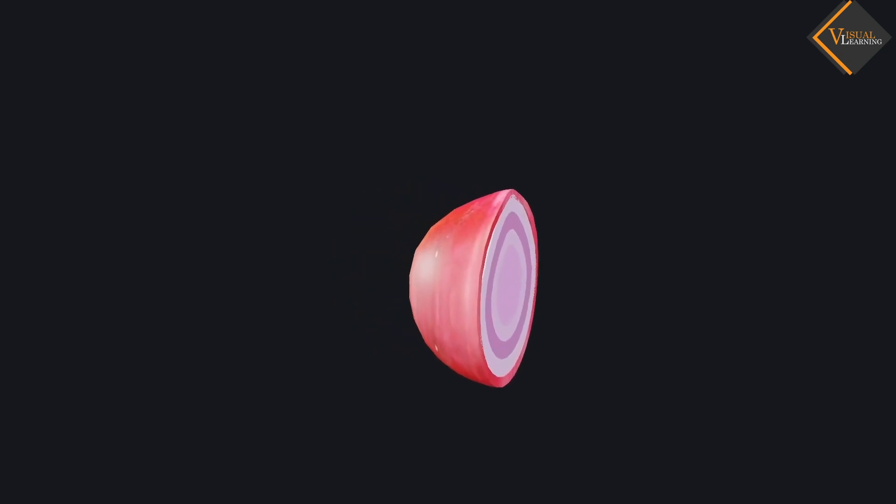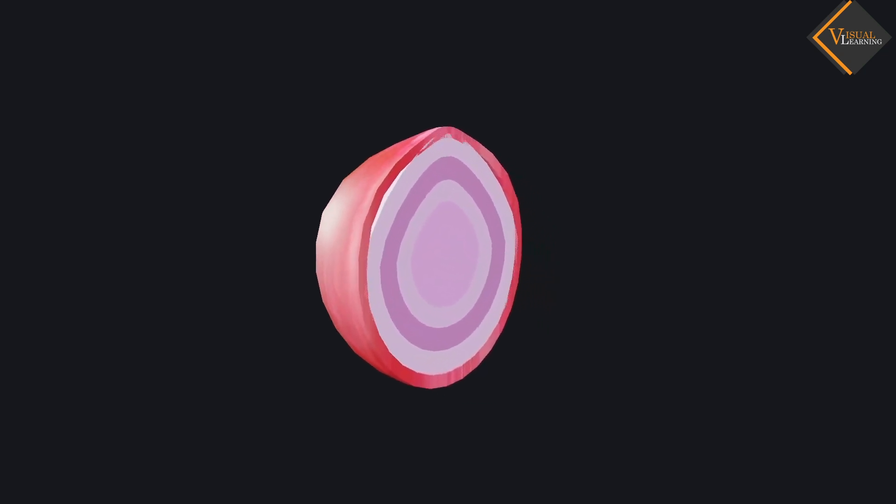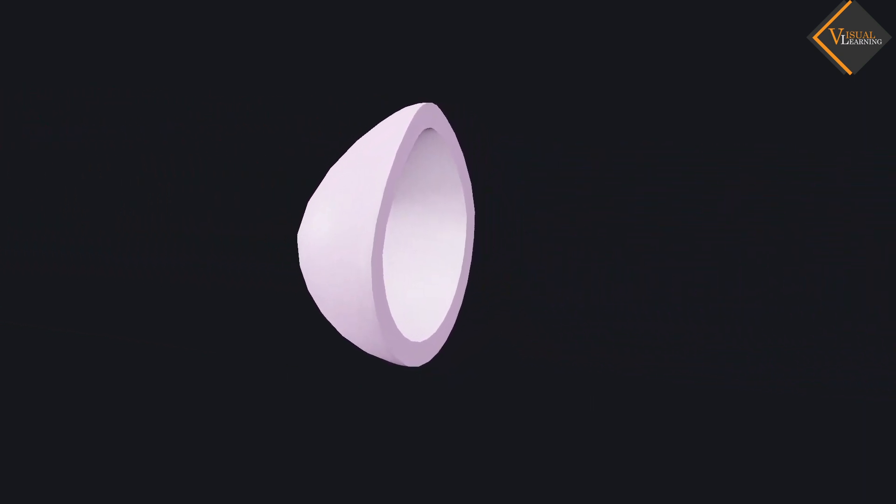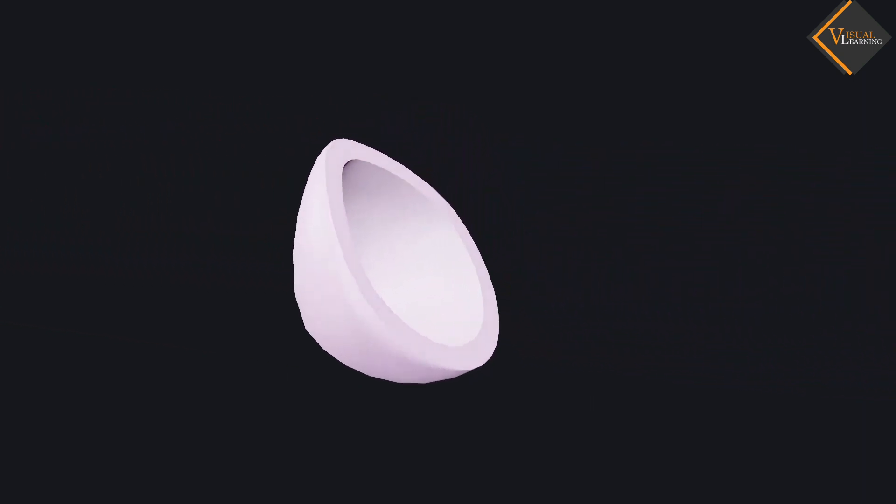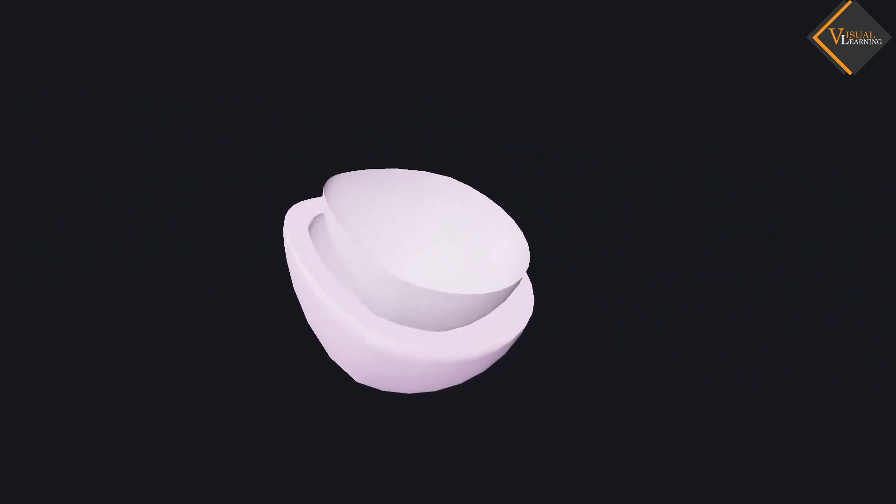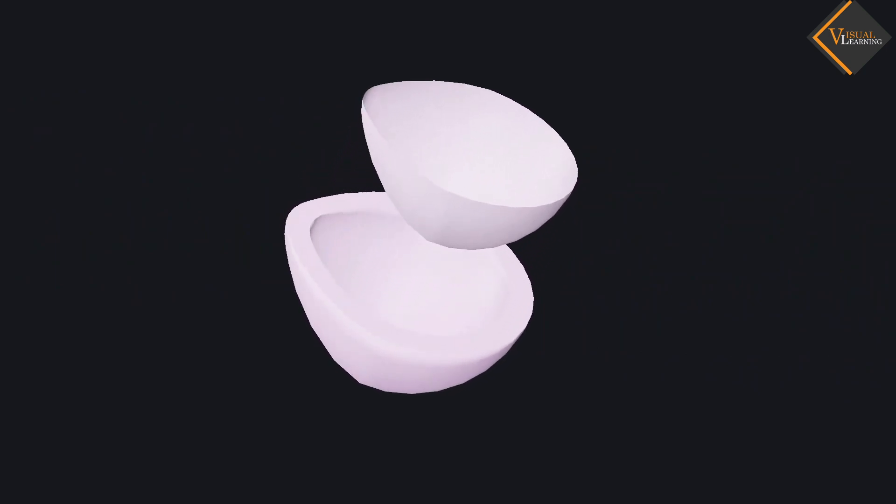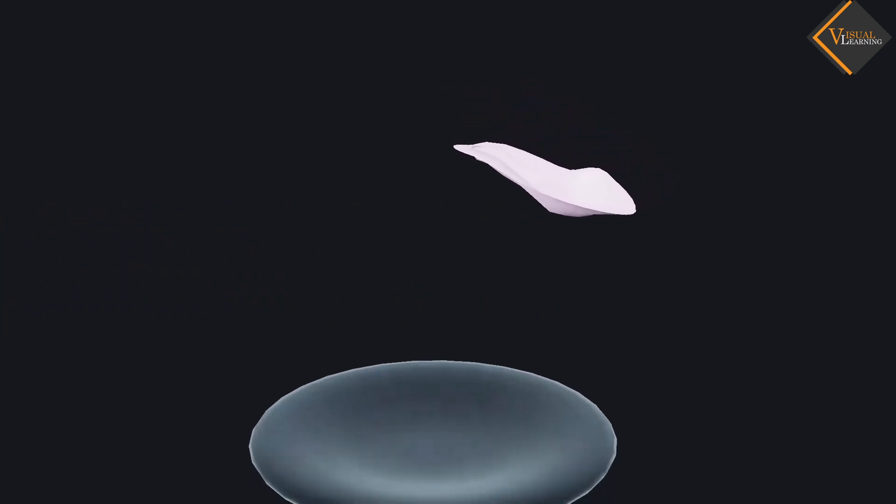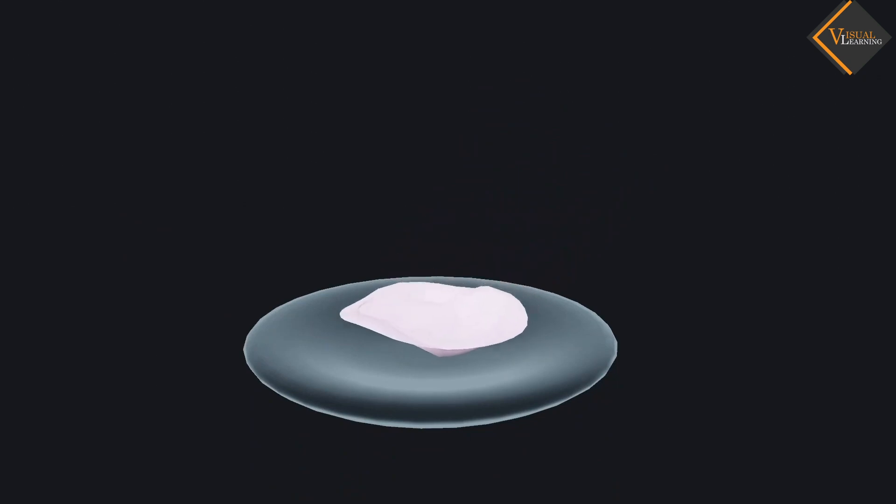Let us take a small piece from an onion bulb. With the help of a pair of forceps, we can peel off the skin from the concave side of the onion. This layer can be put immediately in a watch glass containing water. This will prevent the peel from getting folded or getting dry.